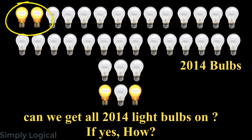Let me repeat the puzzle. On a circle, there are 2014 light bulbs — two are in the on state and the remaining 2012 are in the off state. You can choose any bulb and change the state of the neighboring bulbs only. Can we get all 2014 light bulbs on? If yes, how?